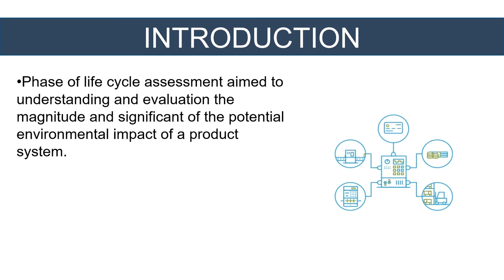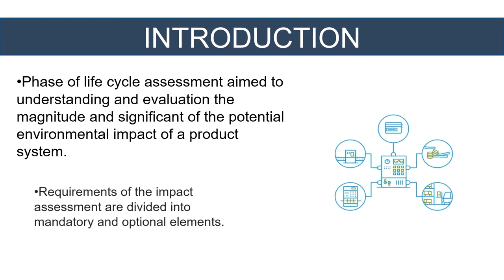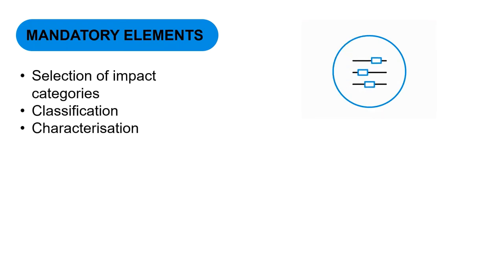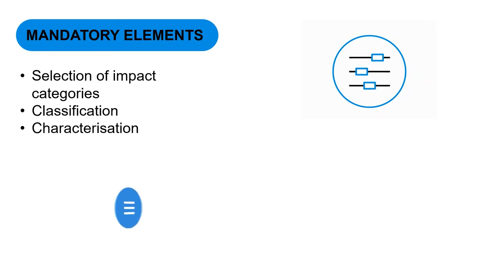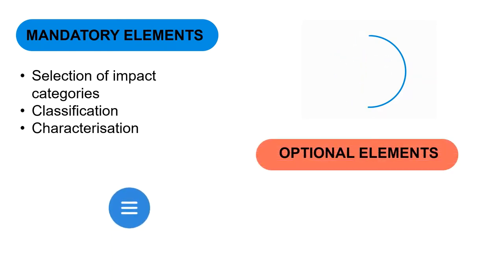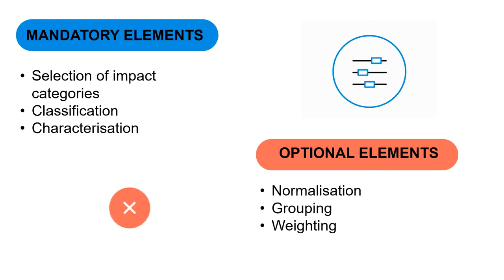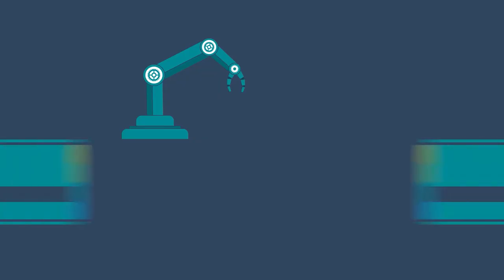Requirements of the impact assessment are divided into mandatory and optional elements. Mandatory elements are compulsory in life cycle impact assessment and include selection of impact categories, classification, and characterization. Optional elements include normalization, grouping, and weighting.